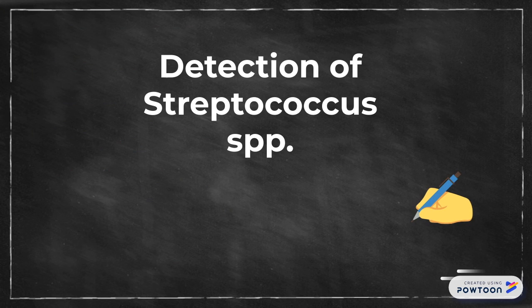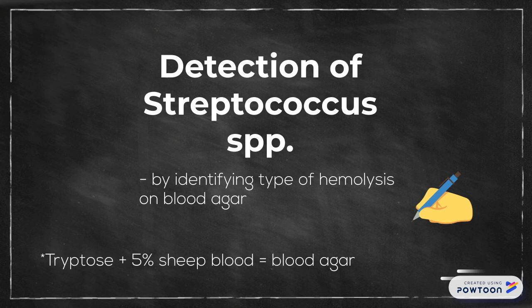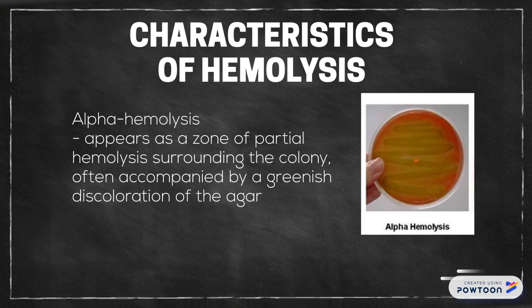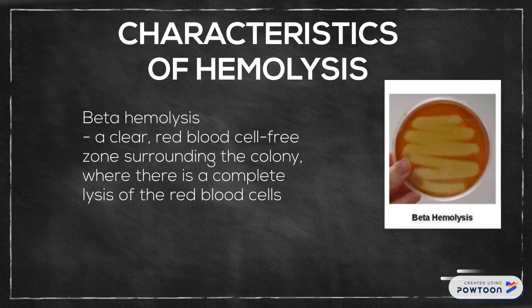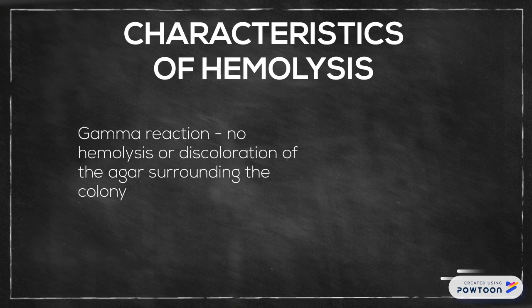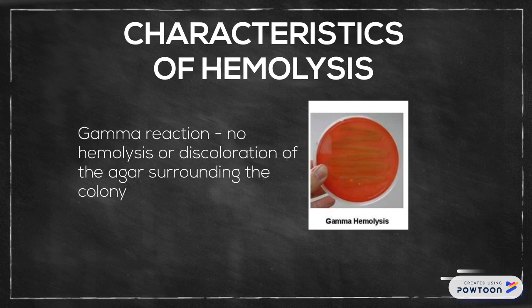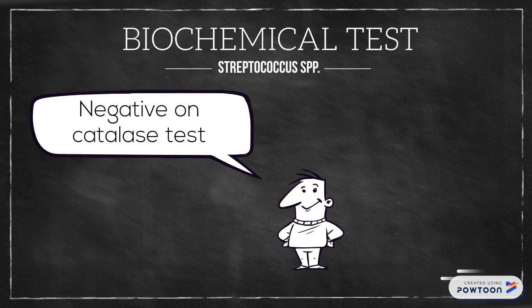Detection of Streptococcus species can be done by identifying the type of hemolysis on blood agar. Blood agar is made up of tryptose and 5% sheep blood. Alpha hemolysis appears as a zone of partial hemolysis surrounding the colony, often accompanied by a greenish discoloration of the agar — an example is Streptococcus pneumoniae. Beta hemolysis gives a clear, red blood cell-free zone surrounding the colony, indicating complete lysis — an example is Streptococcus pyogenes. Gamma reaction shows no hemolysis or discoloration. For biochemical tests, Streptococcus species give negative results on the catalase test.